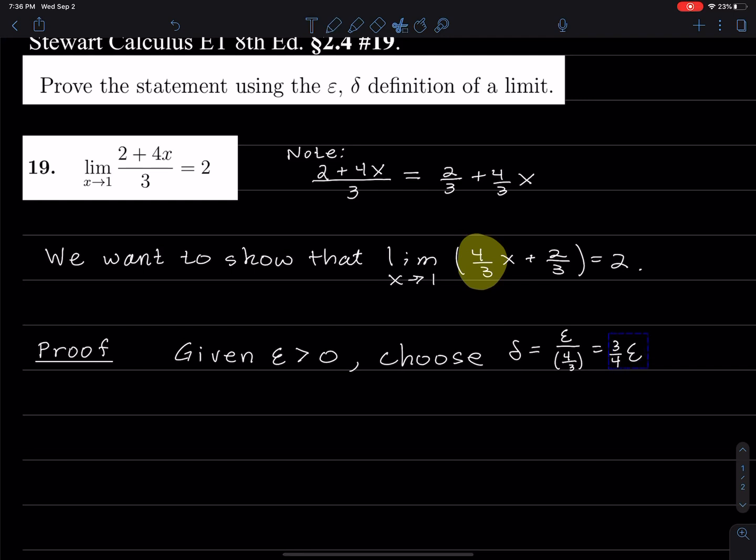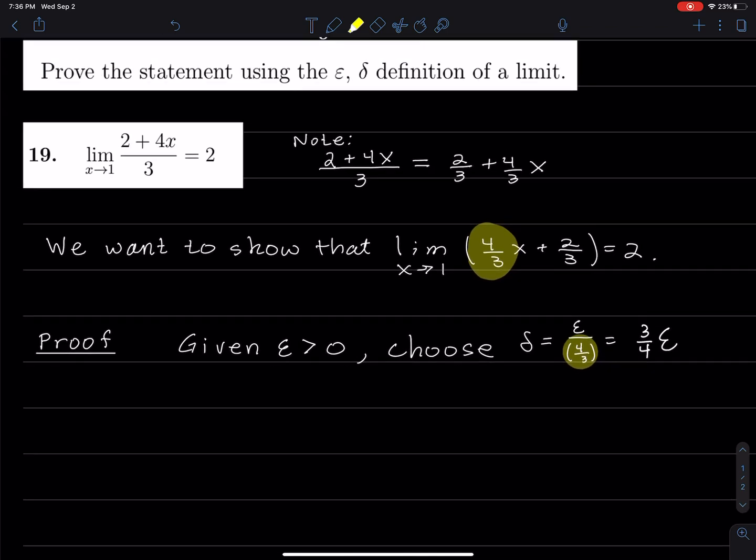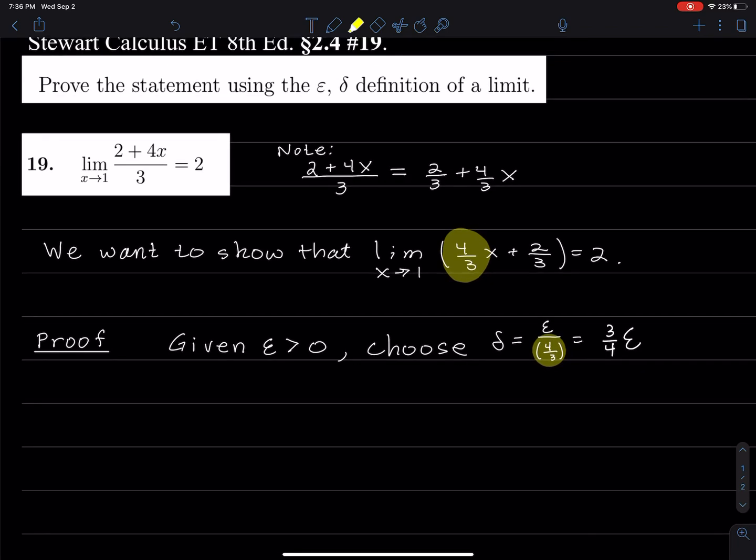When we are looking at a function which is the equation of a line, what we do is we take the coefficient of x, put it down below the fraction of epsilon divided by that coefficient of x, and that is what we want delta to be. We'll see why that works.